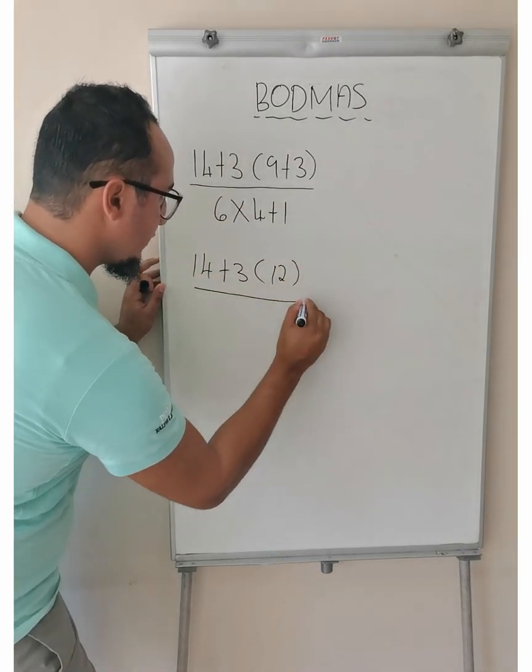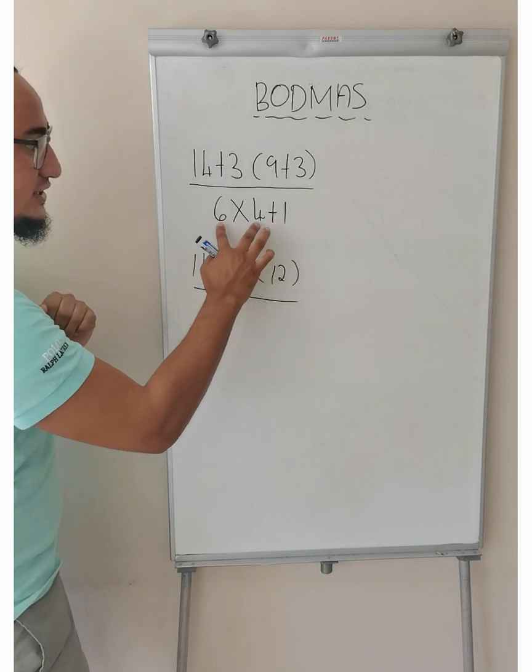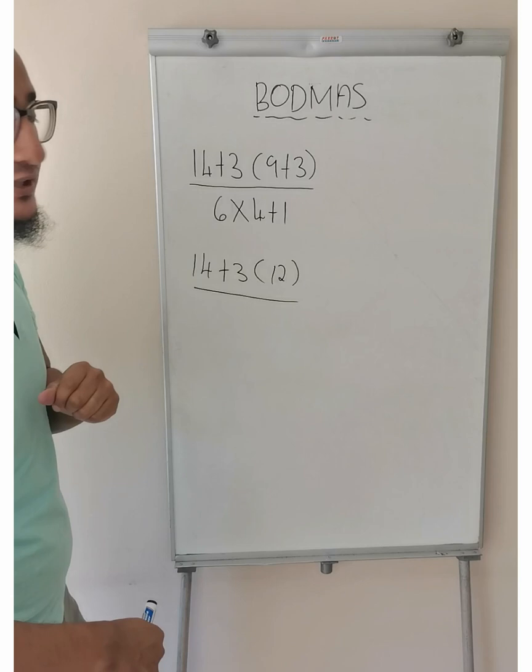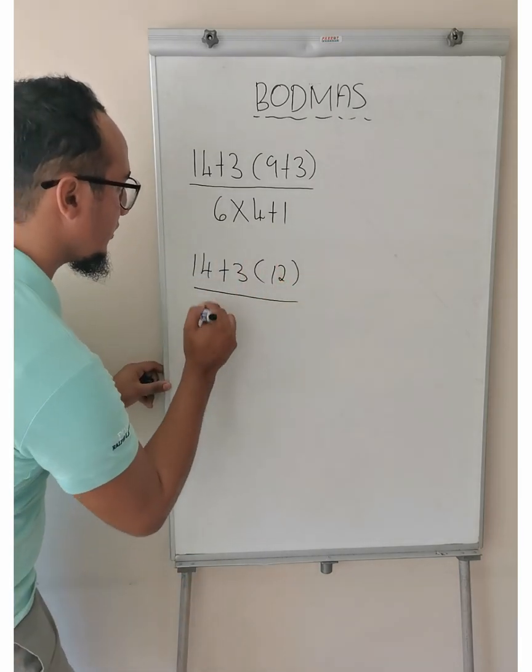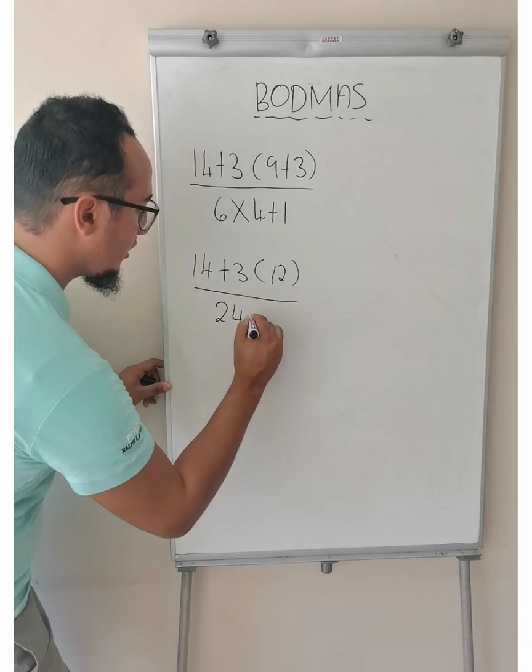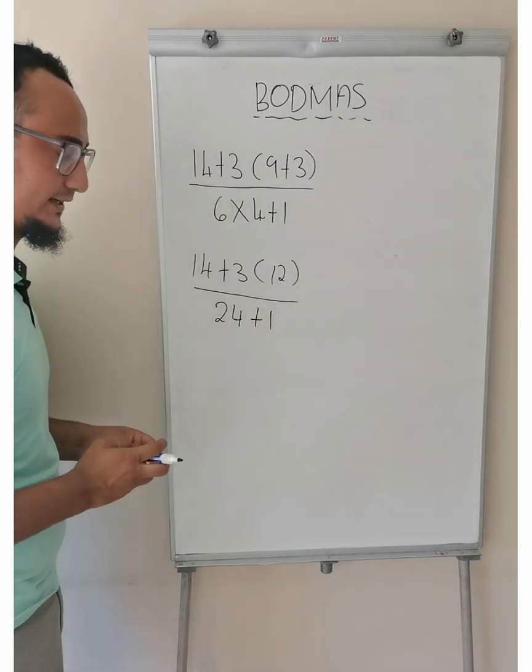Over. Do I first add or do I first multiply? What does Bodmas say? The order says I need to first multiply. So, 6 times 4 is equal to 24 plus 1.